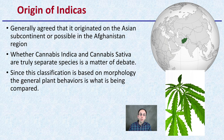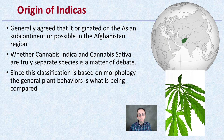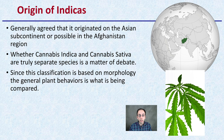Whether cannabis indica and cannabis sativa are truly separate species is actually a matter of debate and some controversy. Since its classification is based on morphology, the general plant behavior is what is being compared — looking at indicas having certain morphologies or certain physical characteristics.